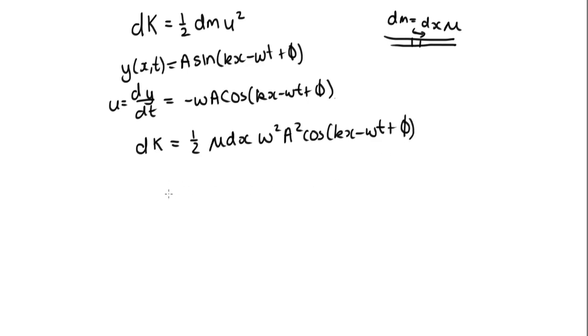Since power is energy divided by time, let's find how much energy flows through in a small time increment. Dividing by dt, we get dK/dt = (1/2) μ (dx/dt) ω² A² cos²(kx - ωt + φ).